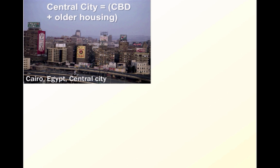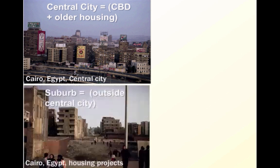Here you can see Cairo. And if you move even further out, you get to the suburbs or the suburban area, which is outside of the central city. In the case of Cairo, you don't see true suburbs, but you do see some housing projects being done outside.